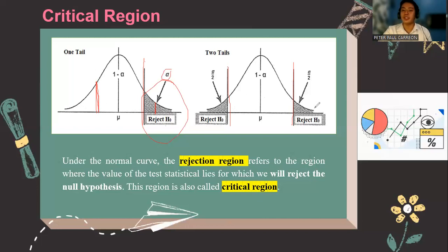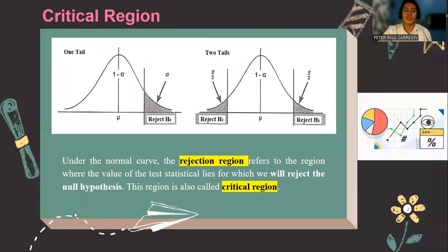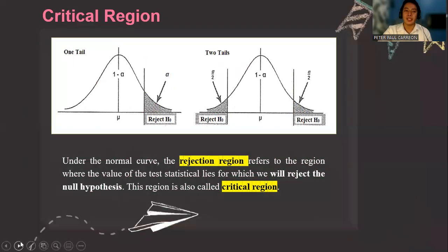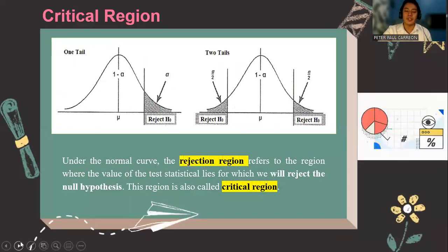For a two-tailed distribution, in the middle of the distribution is where we fail to reject the null hypothesis. And if either the vertical line lies on the left side or the right side of the distribution, then we will reject the null hypothesis. That is how we decide based on the critical region or the rejection region.